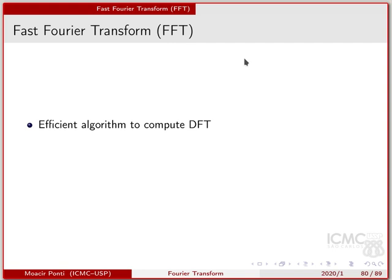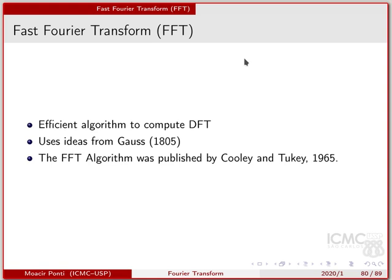Imagine we have an image with 2 megapixels. What we are going to require to compute the DFT would be around 2 million pixels squared, which is a big number and would require a lot of time. So the FFT is another implementation of the Fourier transform that uses ideas from Gauss from his work in the 1800s. But those ideas were used by Cooley and Tukey to build or develop this FFT algorithm that was published in 1965.